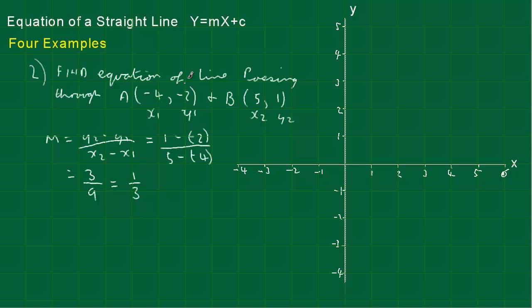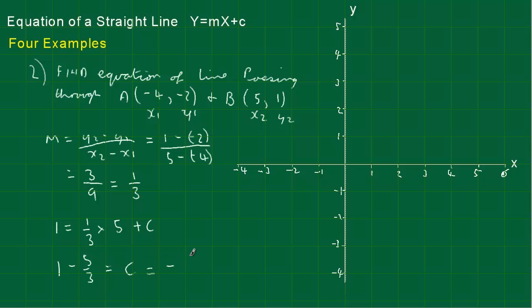Now we've got the gradient m, which we pop into the equation y equals mx plus c. Picking point B with y equals 1 and x equals 5, this leaves c on its own. So 1 equals a third times 5 plus c, which is 5 thirds. Moving that across: 1 minus 5 thirds equals c. Well 1 is 3 thirds, so 3 thirds minus 5 thirds equals minus 2 thirds.